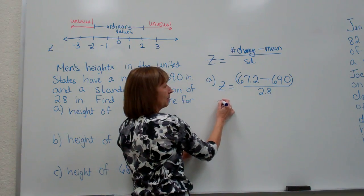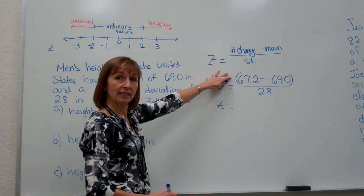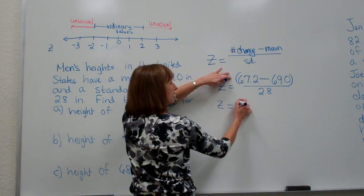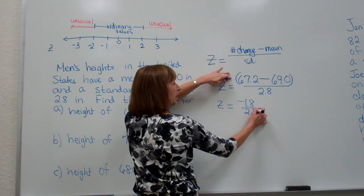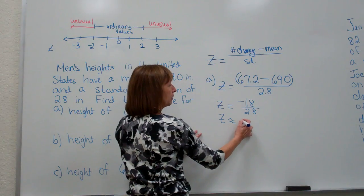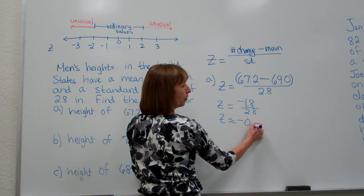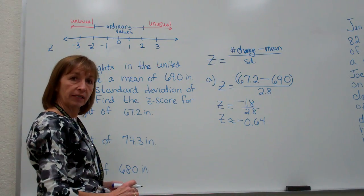We'll get the same as if I actually did this out by hand. Taking our 67.2 minus our 69.0 is a negative 1.8 divided by the 2.8. And then when we divide that out, our z is approximately equal to negative 0.64, rounding that to two decimal places.